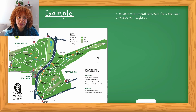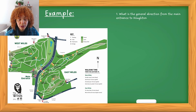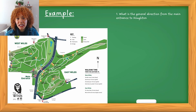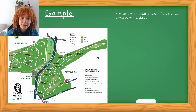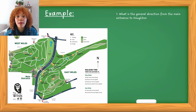The first question says: what is the general direction from the main entrance to Uton? When you get a question like this, general direction means north, south, east, west. Don't give detailed directions like turn left here, first circle right, then turn left — that's not what they're asking. Whenever you see the word 'general', that means they're asking you for compass directions.